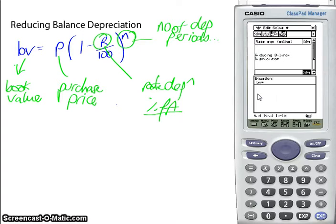I'm going to insert my strip so I can do some calculations. Type in the equation. My book value is equal to purchase price times 1 minus r over 100, and that is to the power m. I'll make sure it looks right. Yep, I'm happy with that.